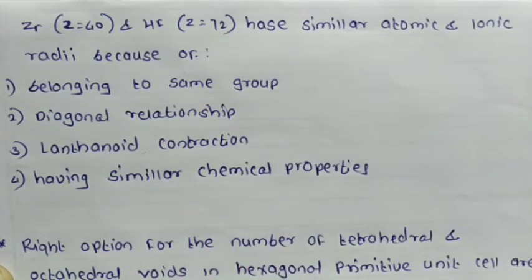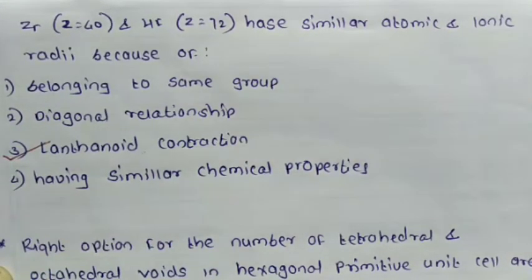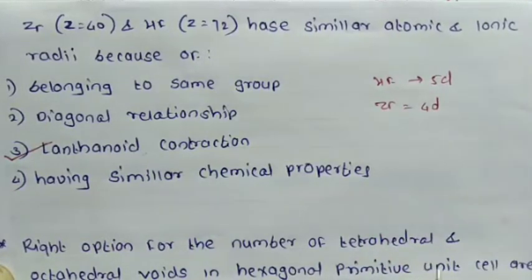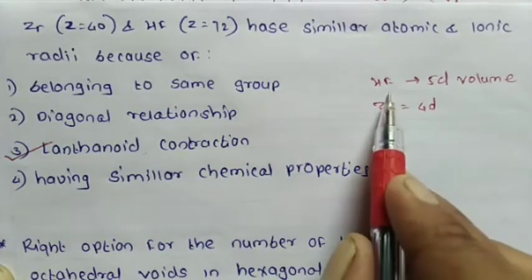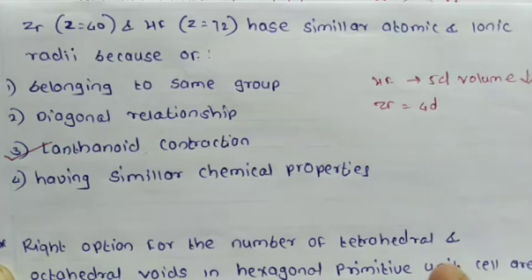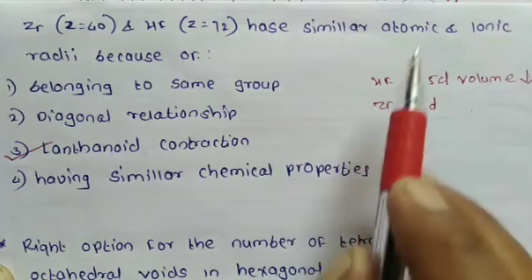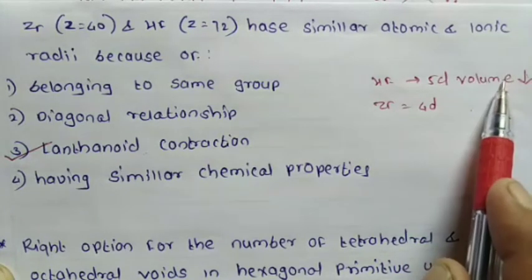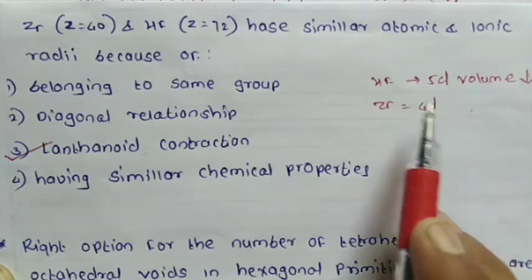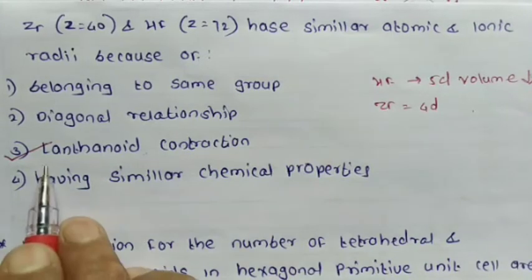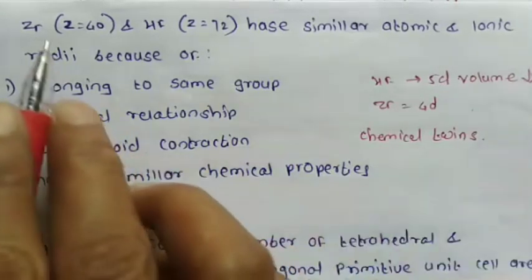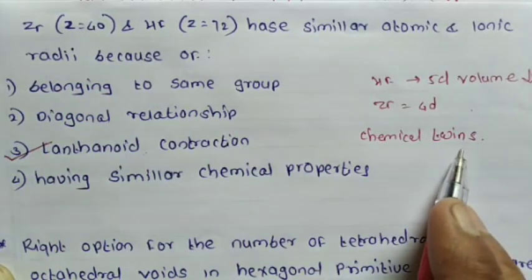Next question: Zr and Hf have similar atomic and ionic radii because of lanthanide contraction. Hf is present in the 5d series and Zr is in the 4d series. The volume of the 5d series (Hf) decreases and becomes nearly equal to the 4d series. Therefore, Zr and Hf have similar atomic and ionic radii due to lanthanide contraction. Zr and Hf are called chemical twins because they have similar chemical properties and are in the same group.